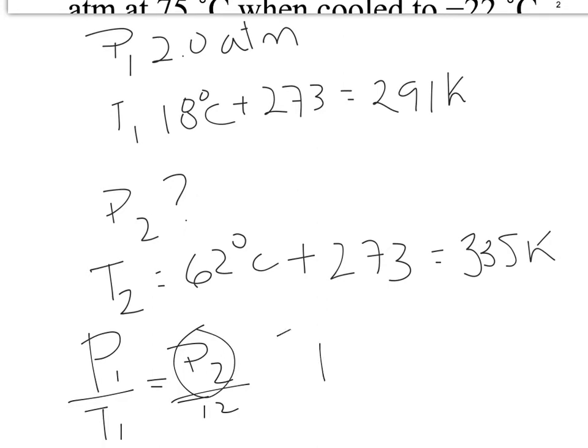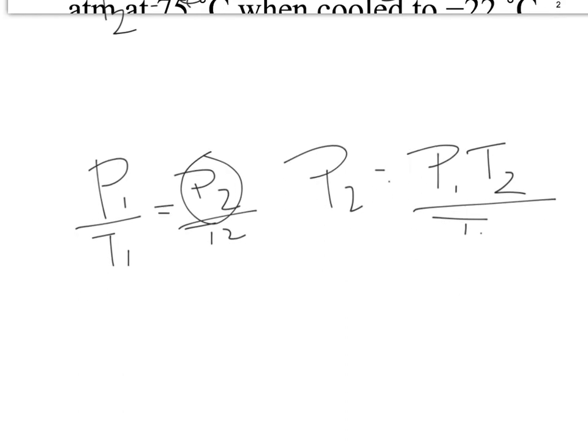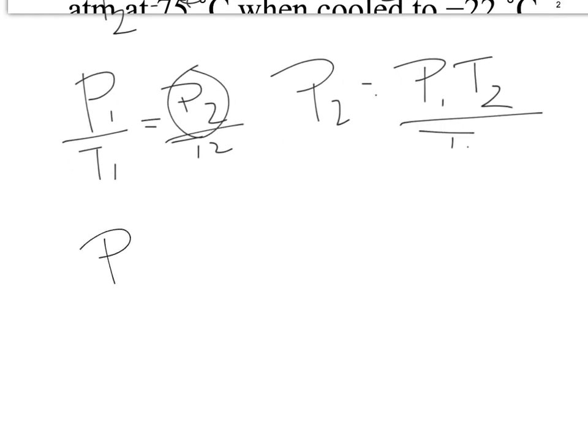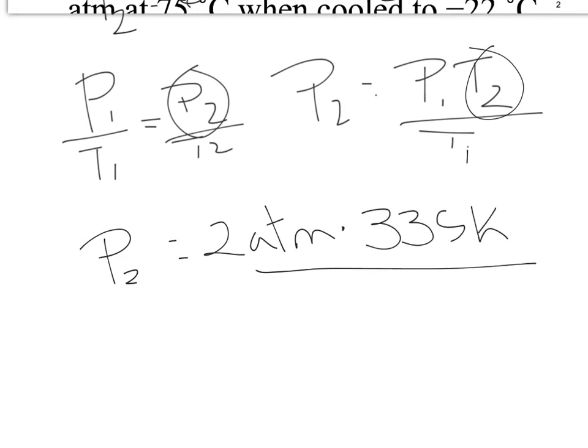In order to solve it, P2 is equal to P1 T2 over T1. We're going to substitute all of our values there, and we have P2 equal to our initial pressure was 2 atmospheres, our T2 was 335, and our T1 was 291 Kelvin. So, we do the calculations, and we end up with P2 equals 2.3 atmospheres.